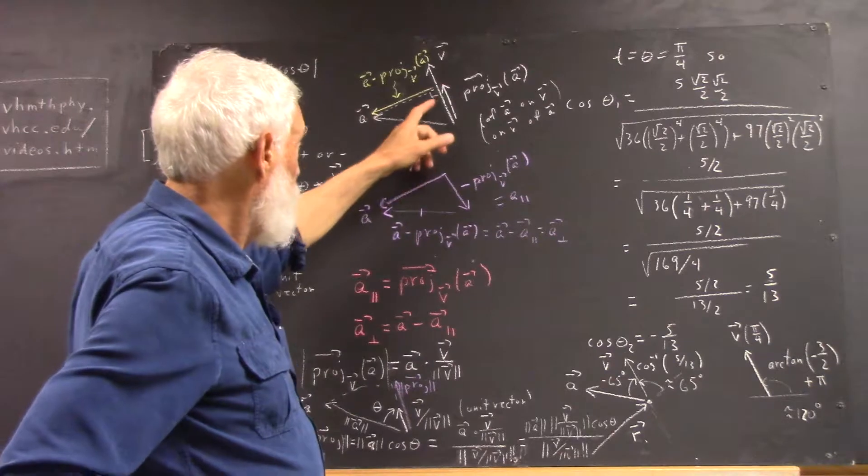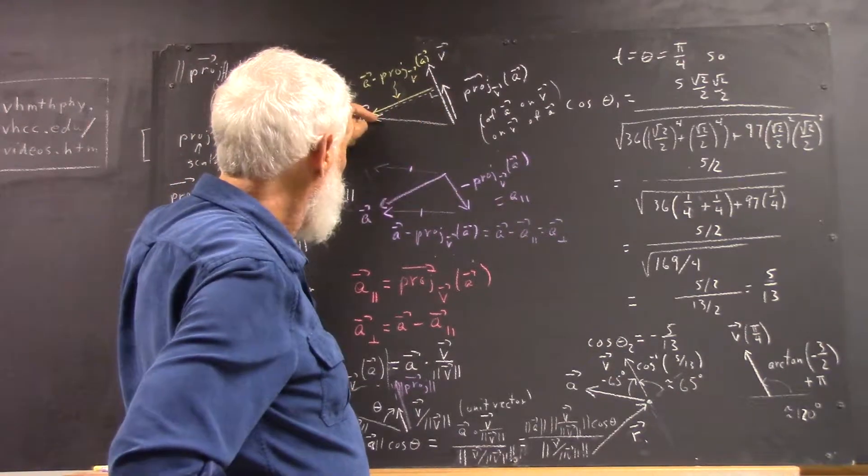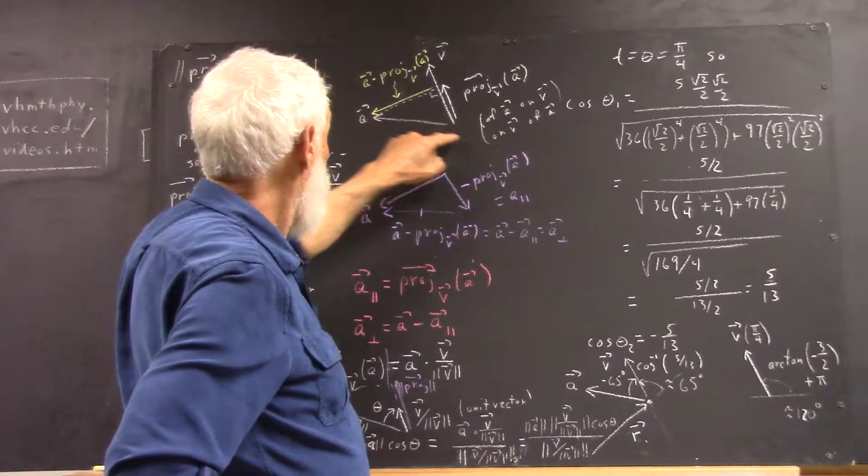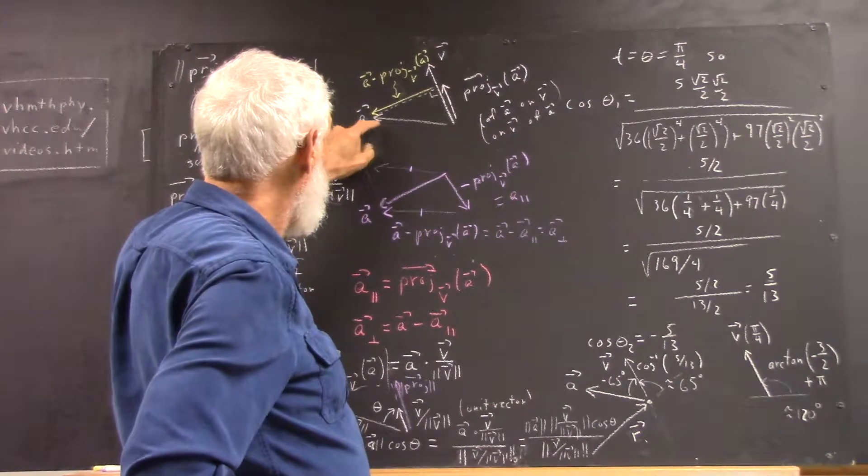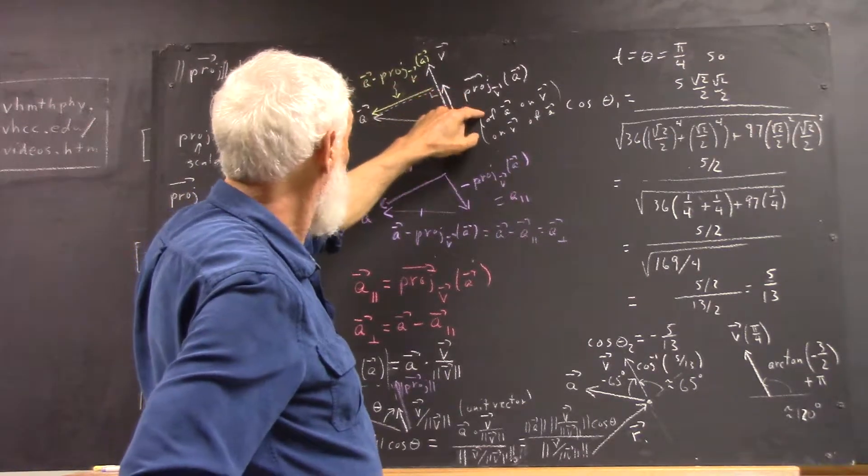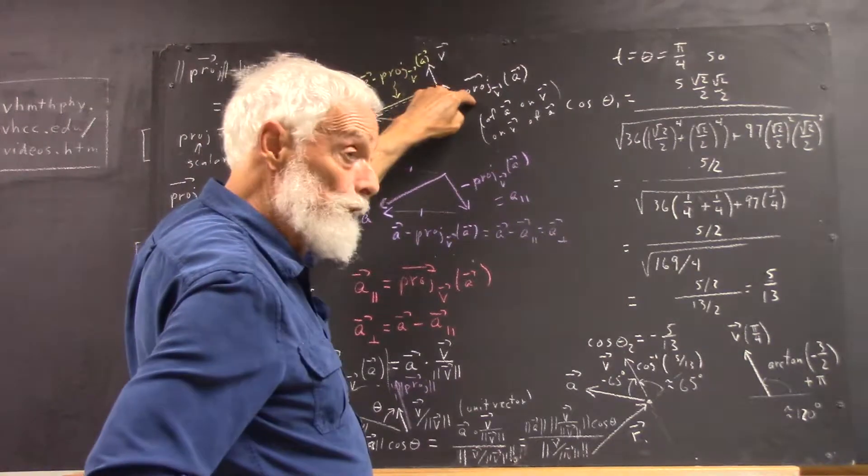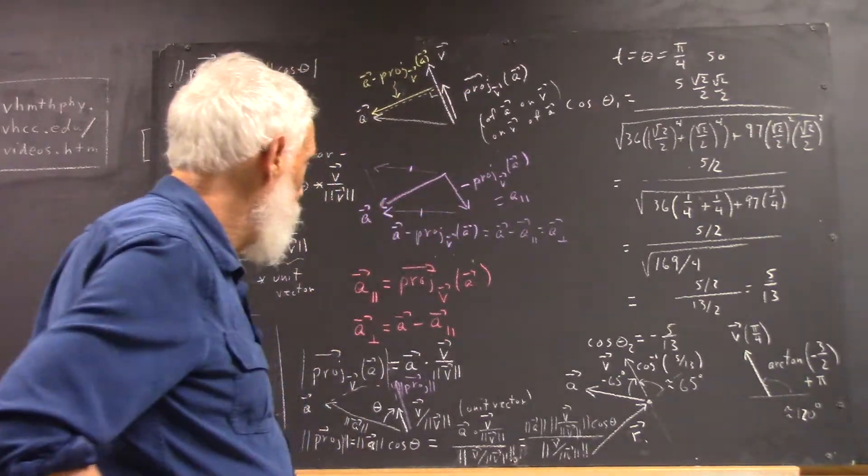So, the point I want to make is that, since this vector and this vector add up to A, then A is equal, then this vector is equal to A minus this vector. If this plus this equals this, then this equals this minus this. And here's a picture of that.